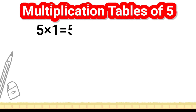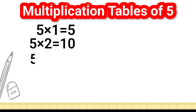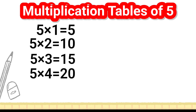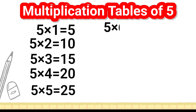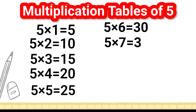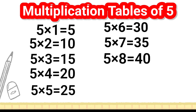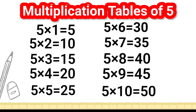5 1's are 5, 5 2's are 10, 5 3's are 15, 5 4's are 20, 5 5's are 25, 5 6's are 30, 5 7's are 35, 5 8's are 40, 5 9's are 45, 5 10's are 50.